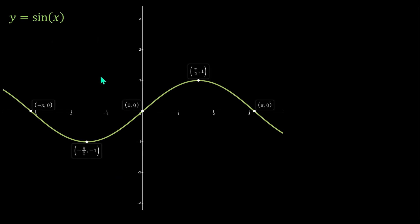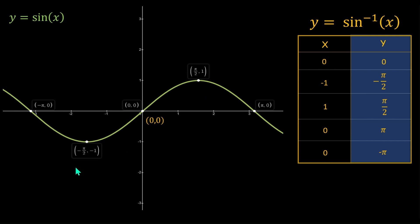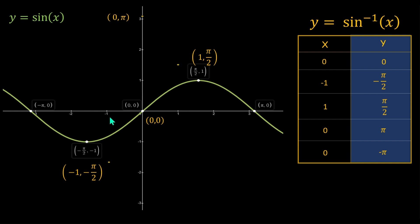This right here is the curve of y = sin x. Let's start plotting points. For (0, 0) on sin x, we get (0, 0) for sin⁻¹x. For (-π/2, -1) we get (-1, -π/2). For (π/2, 1) we get (1, π/2). For (π, 0) we get (0, π), and for (-π, 0) we get (0, -π). Now all we have to do is connect these dots to get the curve.